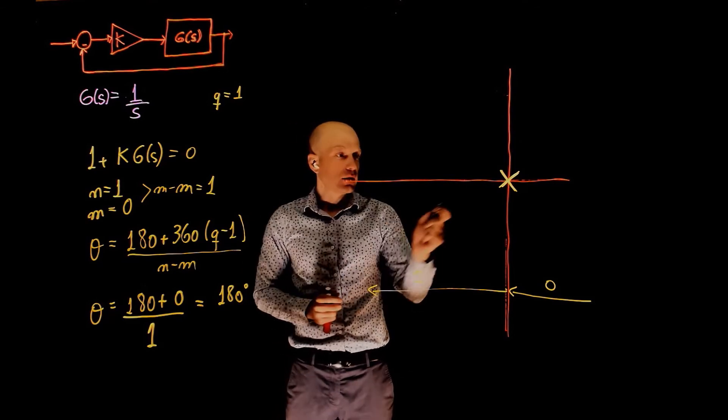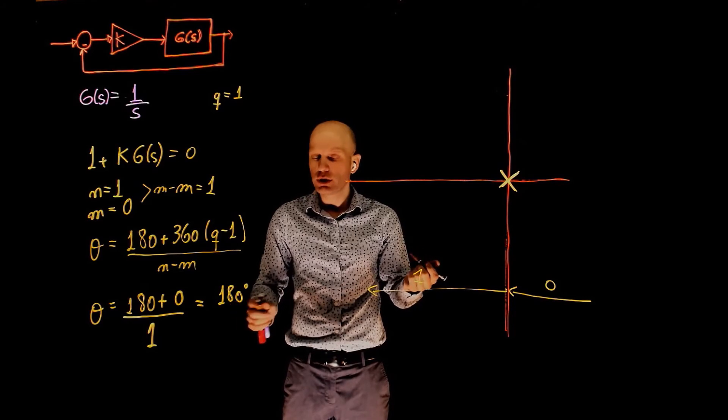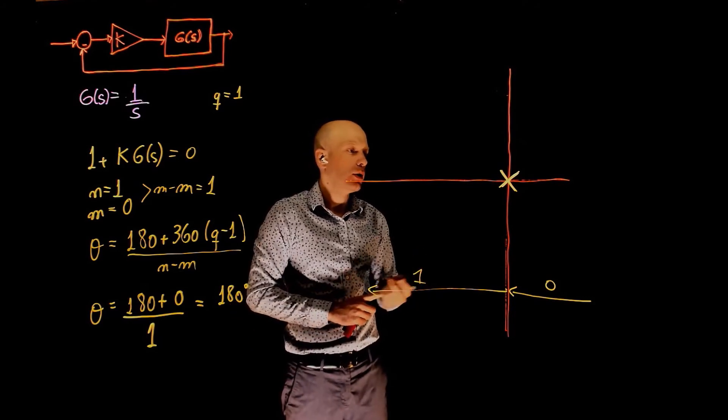We also know that this pole will have to go to infinity because it has no zeros to go to, and it does so following a 180-degree asymptote.